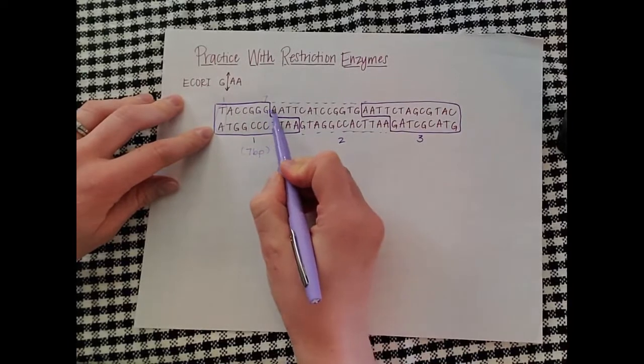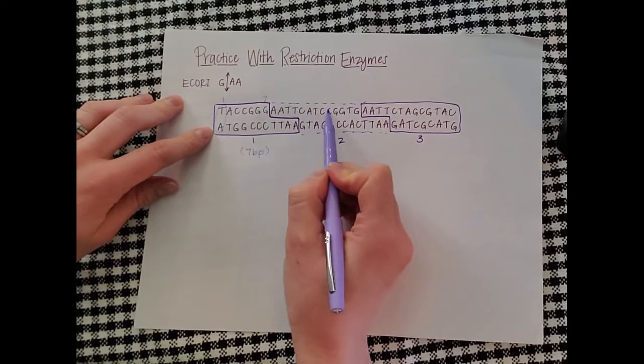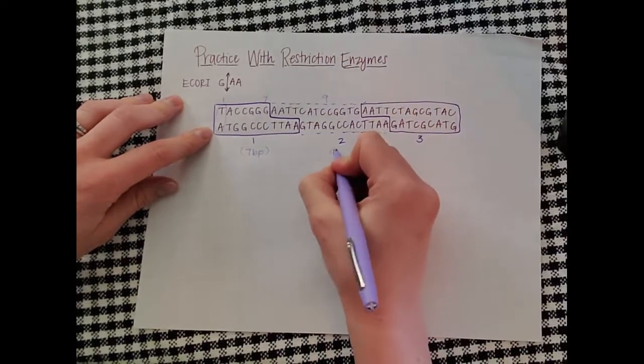We'll do the same thing over here. We're skipping the sticky ends. So it starts here with the CG. One, two, three, four, five, six, seven, eight, nine. So we'll have nine base pairs here.